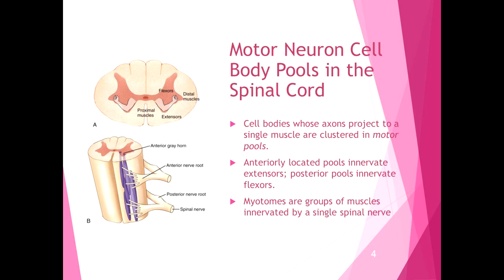Within the spinal cord there are cell body pools. The cell bodies of motor neurons whose actions project to a single muscle are clustered in motor pools. Anteriorly located pools innervate extensors and posterior pools innervate flexors, so flexor and extensor neurons clump together in the spinal cord.